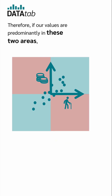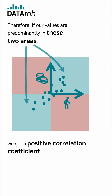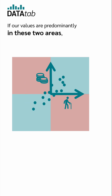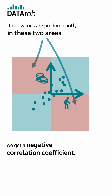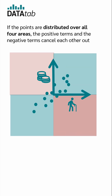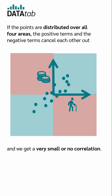Therefore, if our values are predominantly in these two positive areas, we get a positive correlation coefficient and thus a positive relationship. If our values are predominantly in the two negative areas, we get a negative correlation coefficient and thus a negative relationship. If the points are distributed over all four areas, the positive terms and the negative terms cancel each other out and we get a very small or no correlation.